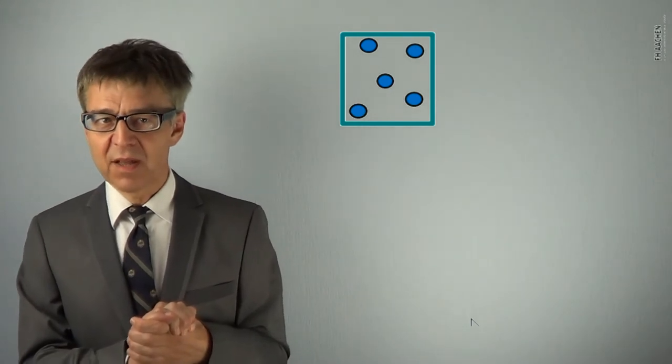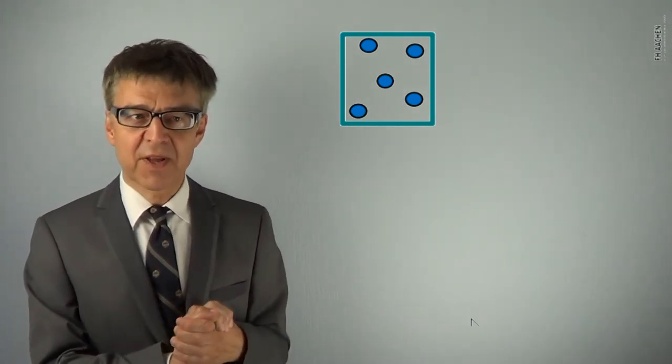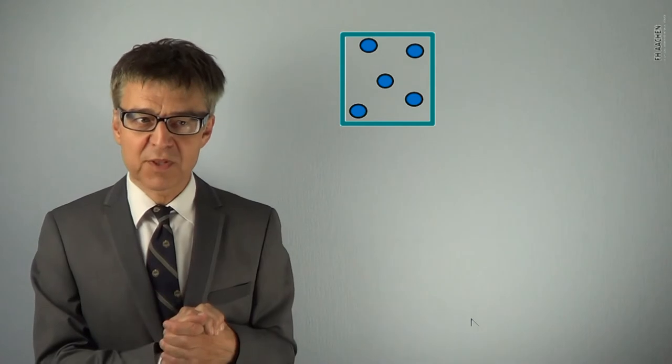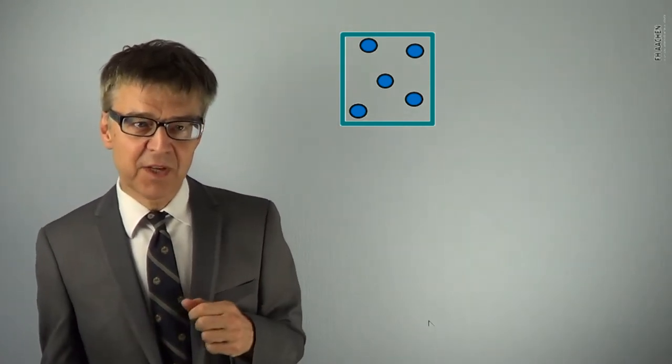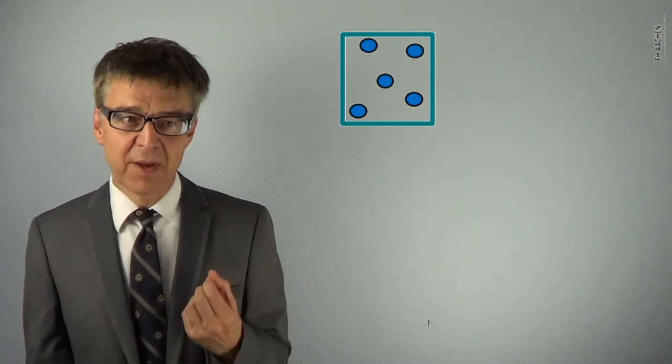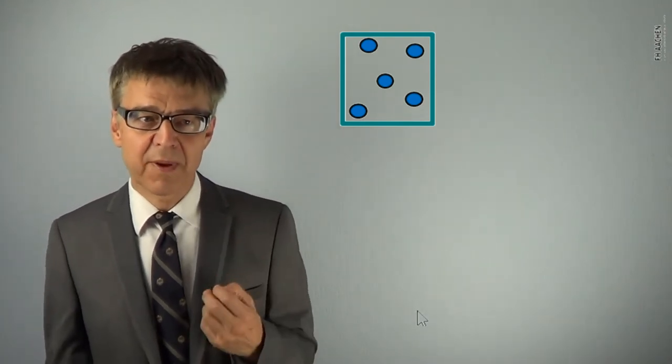Work and heat are path dependent. Therefore, for these process variables, the path has always to be specified. The subscripts p and v denote an isobaric path or an isochoric path, respectively.